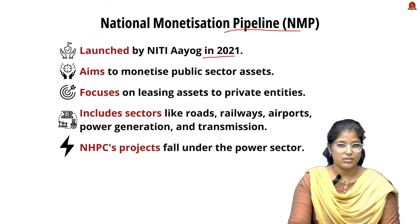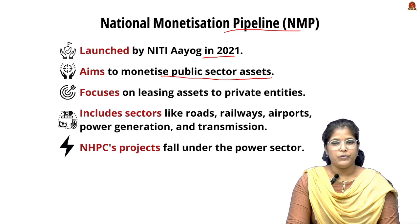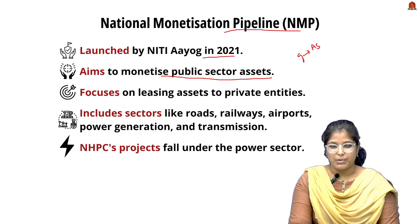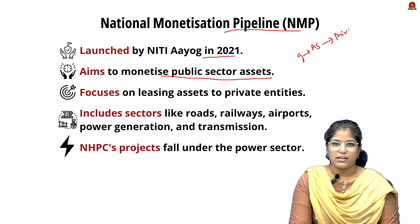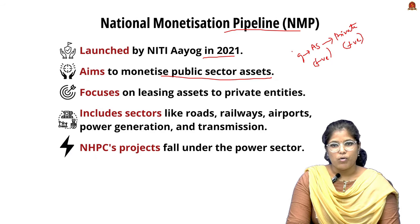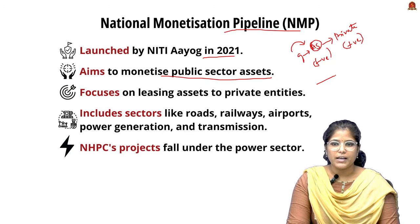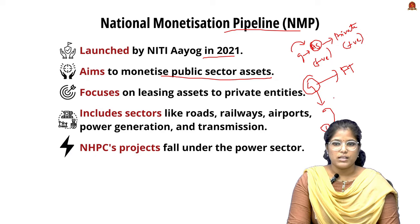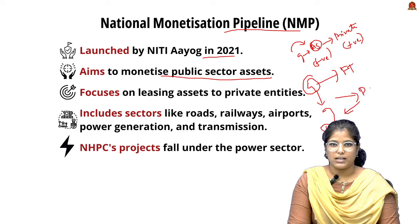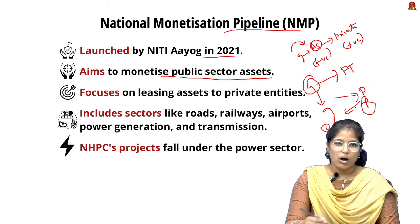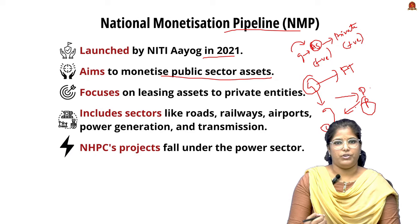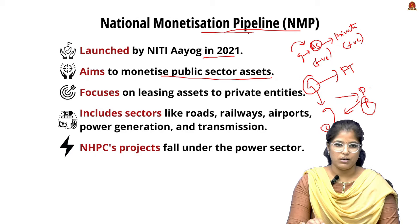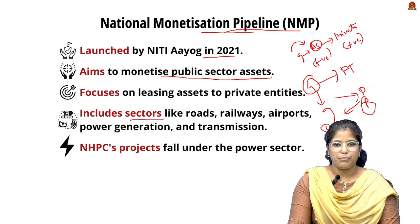The National Monetization Pipeline (NMP) was launched by NITI Aayog in 2021. Its main aim is to monetize public sector assets by leasing them to the private sector. The government, instead of waiting for future revenue from an asset, leases it to a private company and receives the funds immediately, while the private company runs the asset and earns profit.